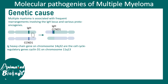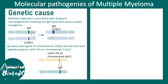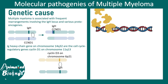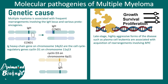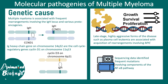After translocation, IGH comes closer to cyclin D1, leading to overproduction of cyclin D1 and excessive cell proliferation. A similar exchange can happen between chromosomes 6 and 14, where cyclin D3 resides on chromosome 6. Alongside these translocations, CMYK — an important transcription factor regulating growth, survival, and proliferation — is involved, typically in the advanced stage of disease. NF-kappa-B pathway components, crucial for B cell survival and proliferation, are also associated with multiple myeloma.